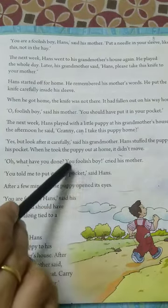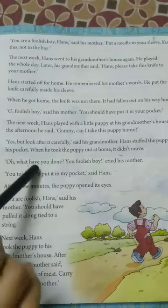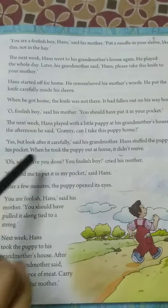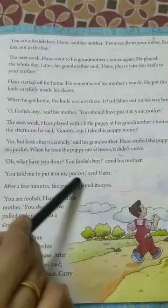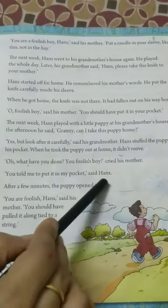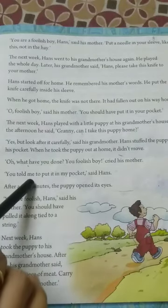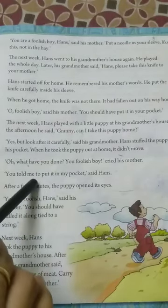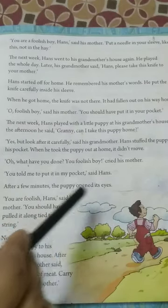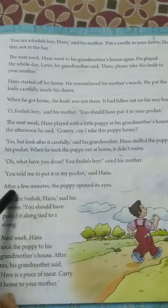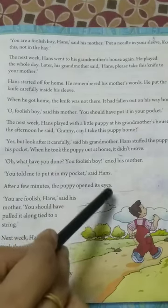Unki madar nai kaha, 'You foolish boy' — tum bekoof lardke. Oh, what have you done? Tum nai kya kiya? You told me to put it in my pocket, said Hans. Hans nai kaha, aap hi nai dukaha tha ki isko pocket me rakh liena. After a few minutes, the puppy opened its eyes. Puppy nai apni eyes open kari.